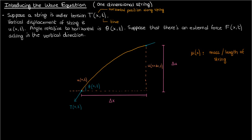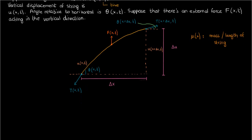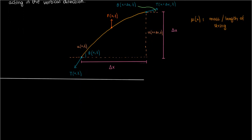Similarly, the tension at the right end of the string will be T of x plus delta x, comma t, and the angle at the right end of the string will be theta of x plus delta x, comma t. And finally, we have the external force capital F acting in the vertical direction.